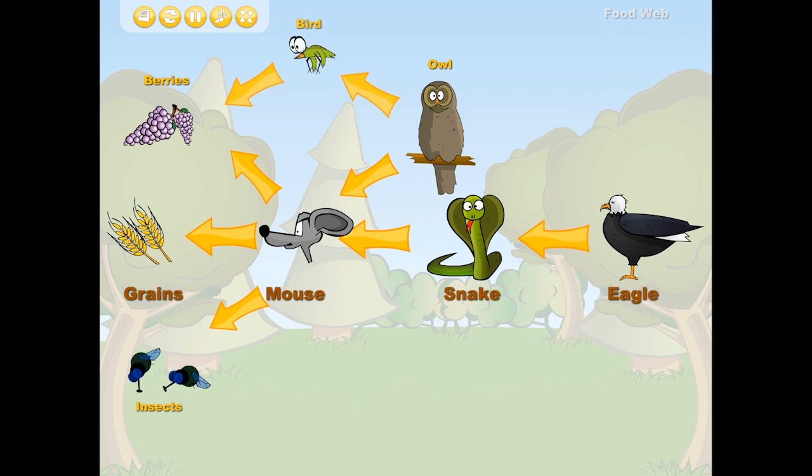In this food web, small birds also feed on berries and owls feed on small birds. Frogs eat insects and snakes eat frogs. The food web is infinite because in nature, everything is connected.